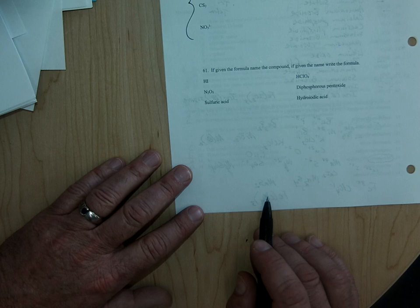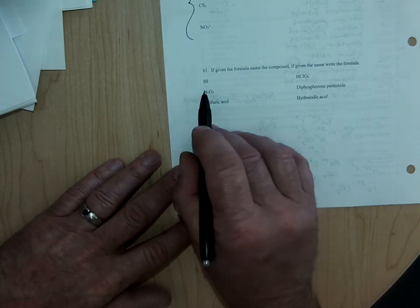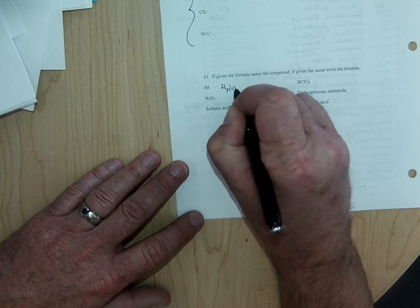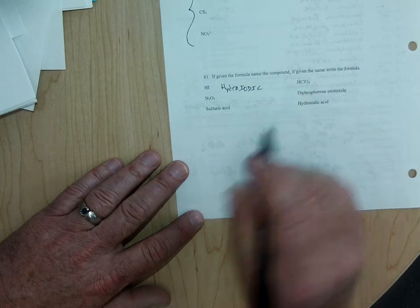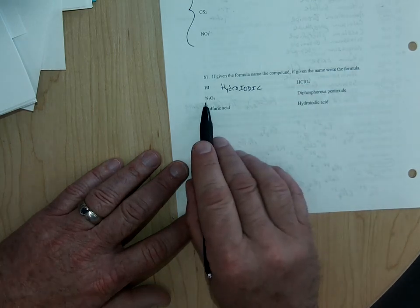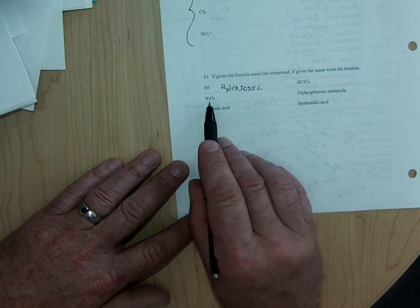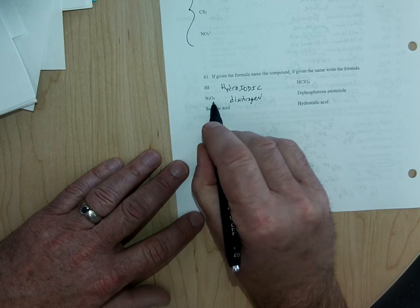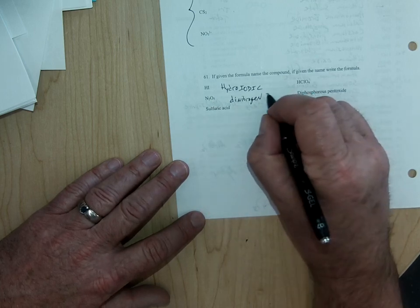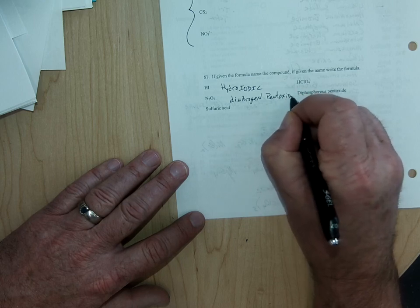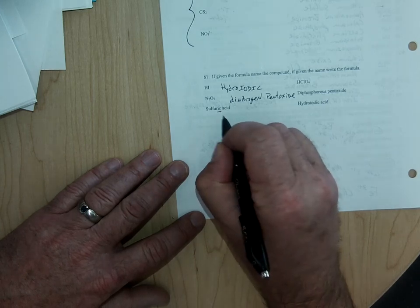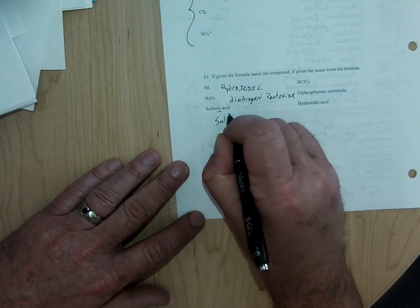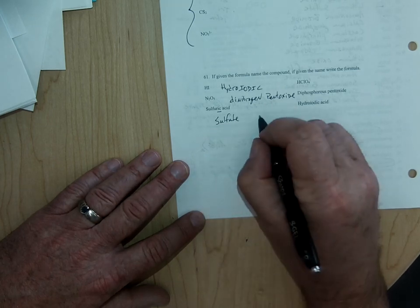But you might need to be able to name some acids tomorrow. You might need to be able to write the formula for some covalent or molecular compounds. So HI, if it's just hydrogen and one other element, then we do use the prefix hydro. So that's hydroiodic acid. N2O5, you have a non-metal and a non-metal. So that is where you do use the prefixes. So there's 2 nitrogen. So that would be dinitrogen. And then the prefix for 5 is penta or pent. So pentoxide. Sulfuric acid. When an acid's name, when the name ends in IC, then it's from the ATE ion. So that means you need to figure out what the sulfate ion is. It's one of the more common polyatomic ions.